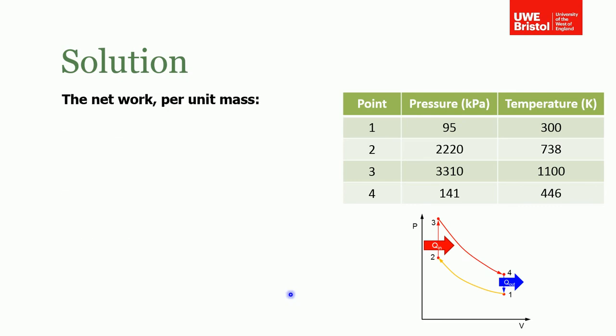Now the last, penultimate thing we're asked to find is the network. The network can basically be found because we know that this is a closed cycle. If we go around here, all the change in internal energy is zero as we come back to this point. It has to be, we're back at the same point. So the network is equal to the net heat supplied. That's what they're saying. Change in internal energy is zero.